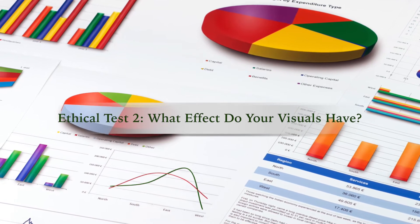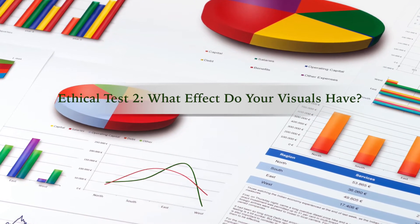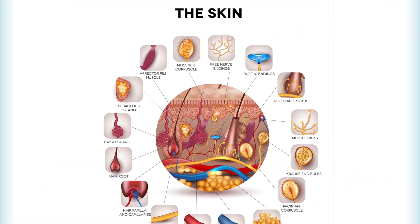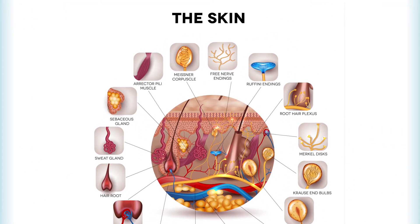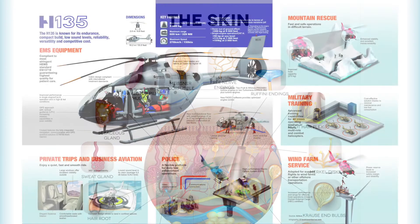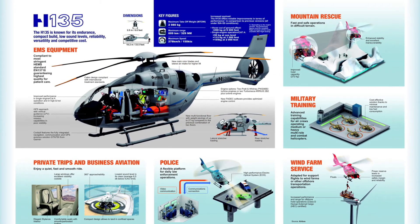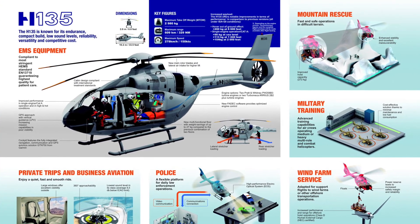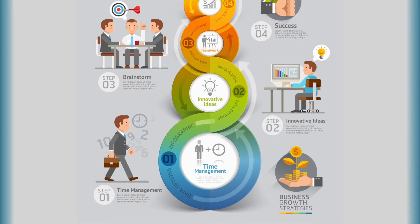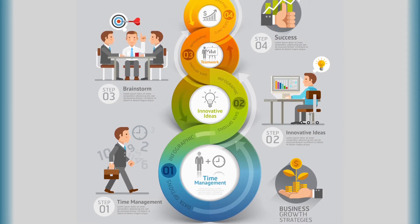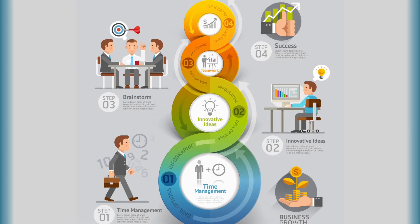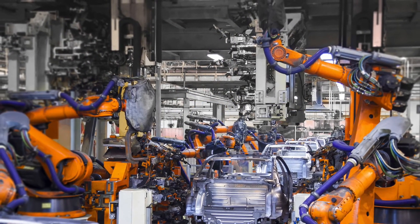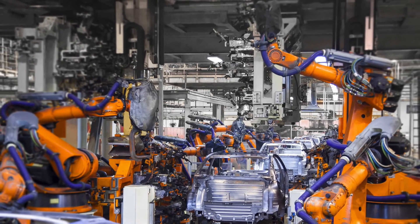The second ethical test is the effect your visuals have on your target readers or viewers. Even if your intent is ethical, you can still mislead audiences through design mistakes or a poor understanding of what the audience needs. This test is more difficult to assess than the first, because you can't always be sure of the effect your visuals have on the audience. However, if you have a clear assessment of your audience members and their information needs, you'll find it easier to craft visuals that provide information in a straightforward and honest way.